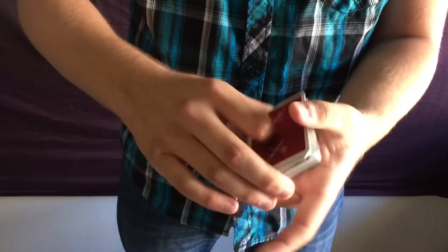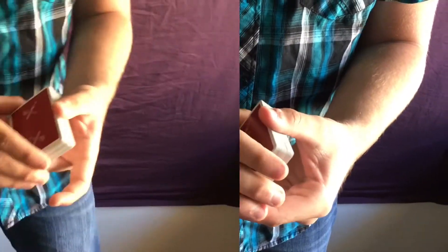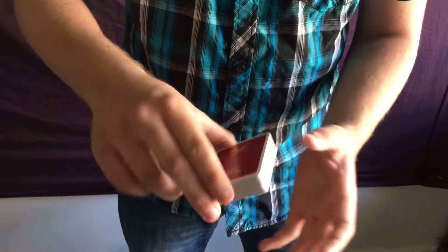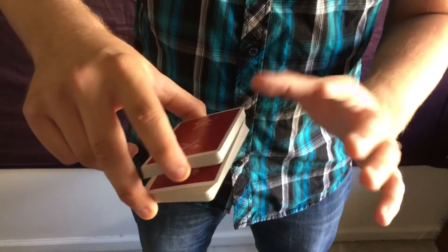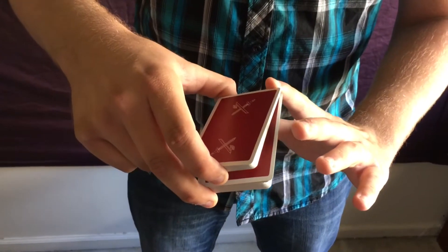For the swing cut variation, start the same way with the biddle grip. You're going to lift it up again, but instead of swinging it, take your index finger of your left or right hand and lift up the packet, swing it, and close it like that.